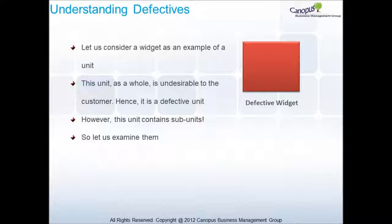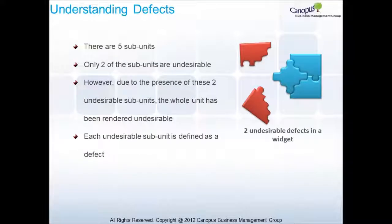However, this unit contains subunits. Let's now examine them a little closer. Let's consider that there are five subunits, out of which only two of the subunits are undesirable. However, due to the presence of these two undesirable subunits, the whole unit has been rendered undesirable. Here, each undesirable subunit is defined as a defect. Let's now understand the definition of a defect.